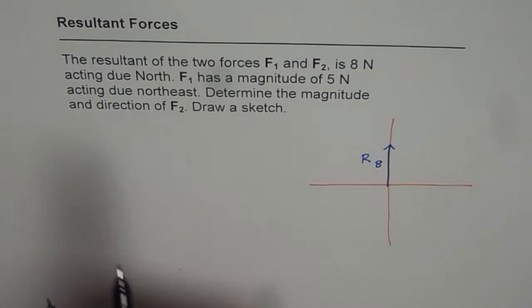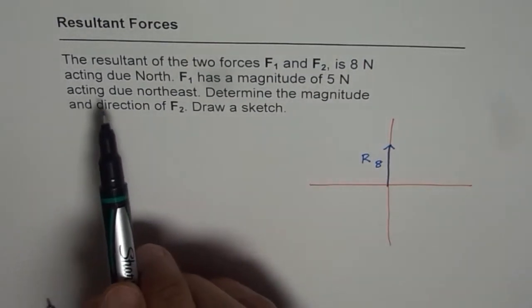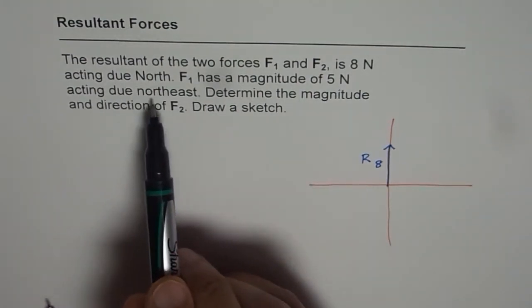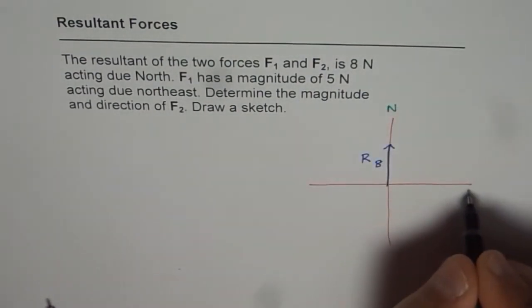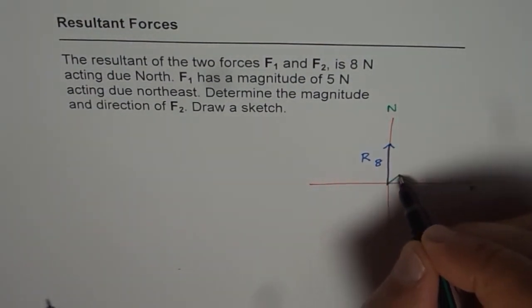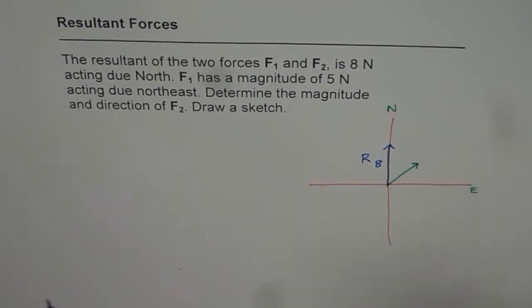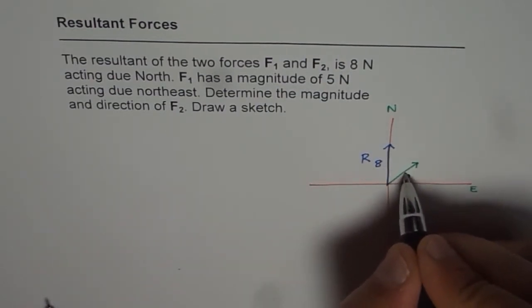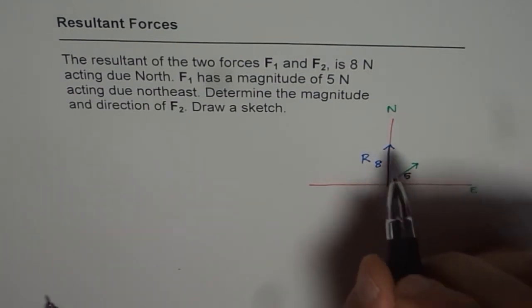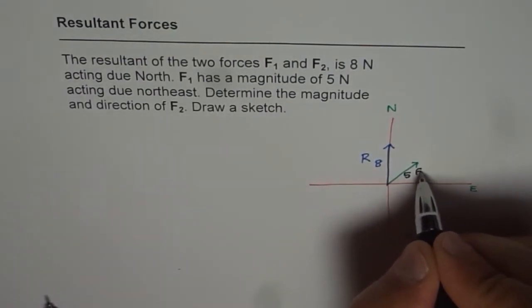Now we are also given that F1 has a magnitude of 5 newtons acting due northeast. So this is north for us and that is east. Northeast means 45 degrees between them and that is northeast and let us say this is 5 newtons. So here we'll write 5 indicating the length to be 5 newtons force for F2, F1. So this is F1. So this is F1 for us.